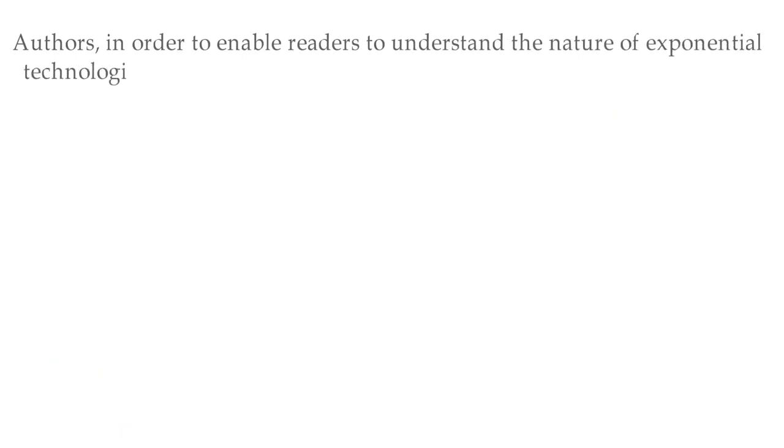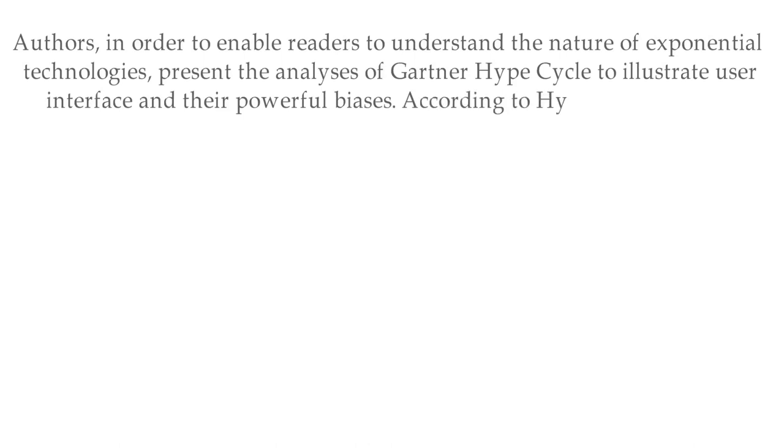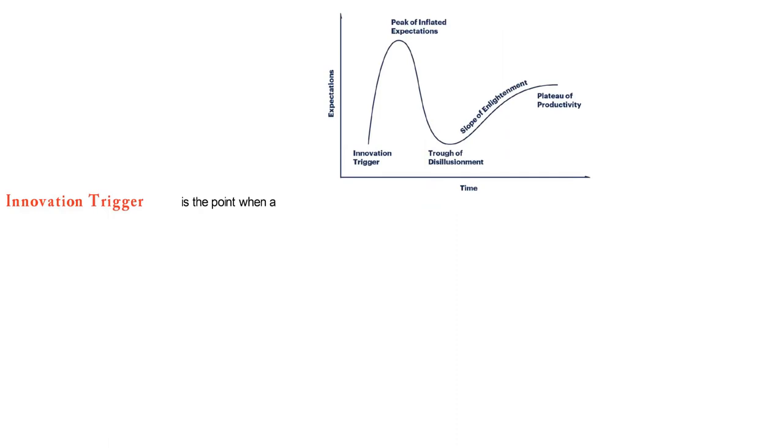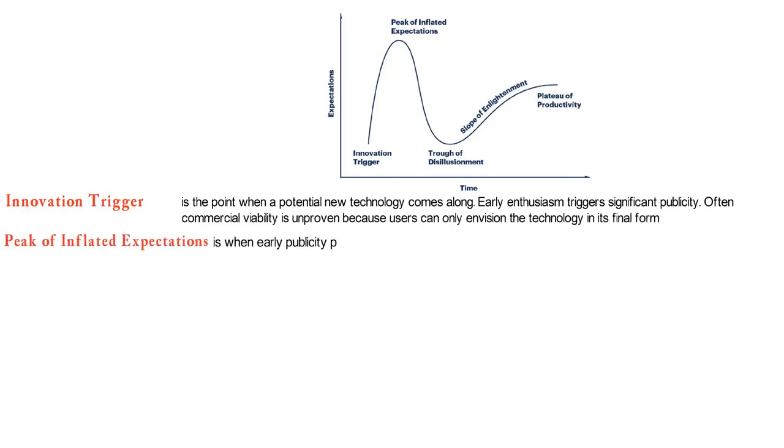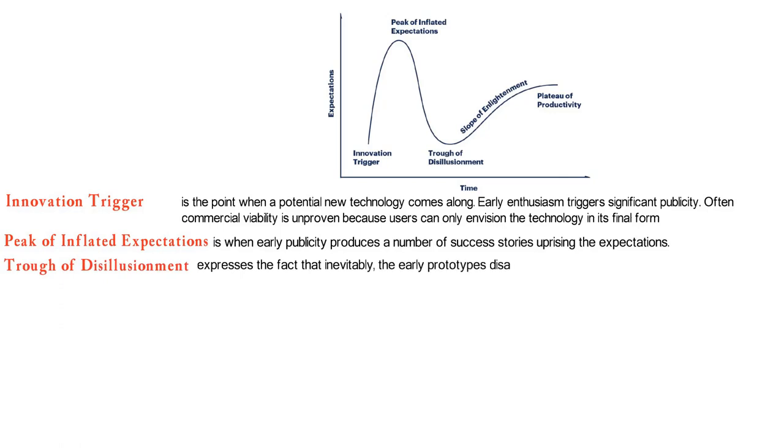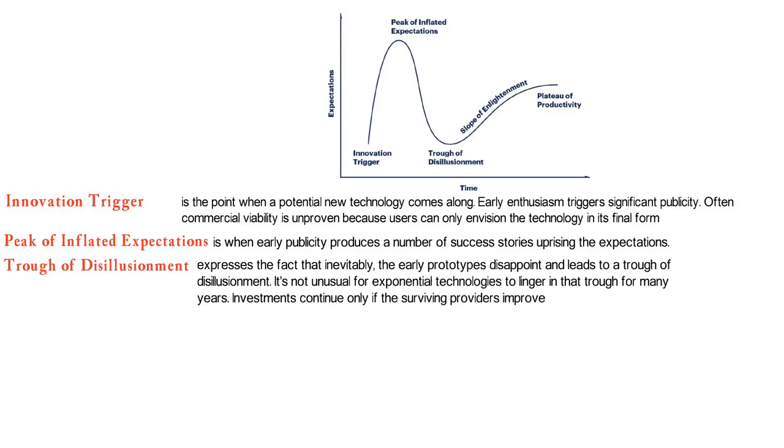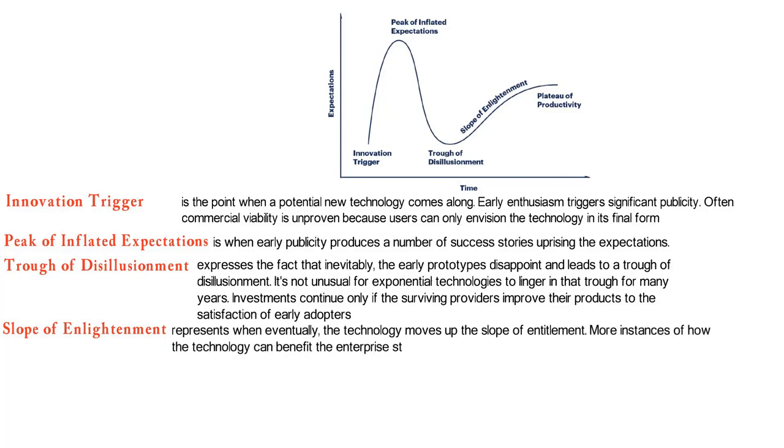In order to further understand the nature of exponential technologies, the Gartner hype cycle illustrates user interface and their powerful biases. The hype curve looks like this: Innovation trigger is the point when a potential new technology comes along. Early enthusiasm triggers significant publicity. Often commercial viability is unproven because users can only envision the technology in its final form. Peak of inflated expectations is when early publicity produces a number of success stories, uprising the expectations. Trough of disillusionment expresses the fact that inevitably the early prototypes disappoint and leads to a trough of disillusionment. It's not unusual for exponential technologies to linger in that trough for many years. Investments continue only if the surviving providers improve their products to the satisfaction of early adopters. Slope of enlightenment represents when eventually the technology moves up the slope of entitlement. More instances of how the technology can benefit the enterprise start to crystallize and become more widely understood. Plateau of productivity is when mainstream adoption starts to take off. Massive productivity transforms entire industries.